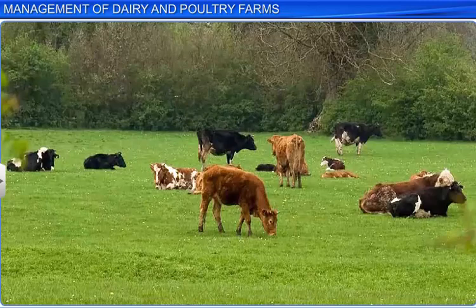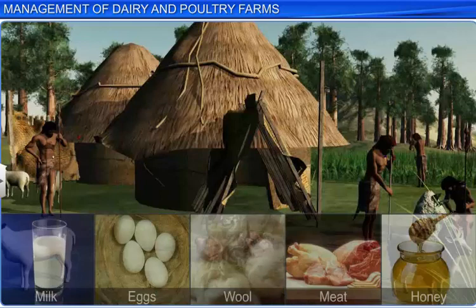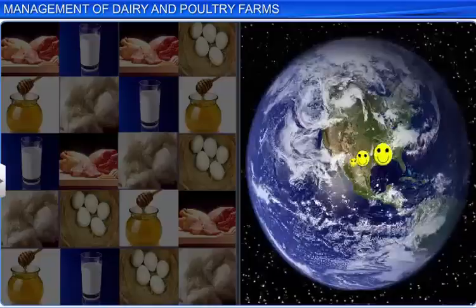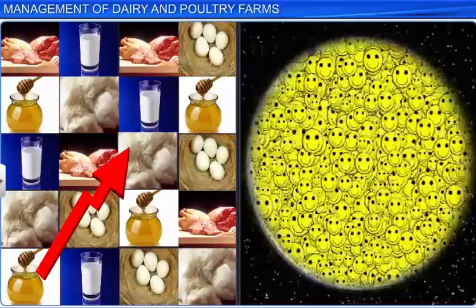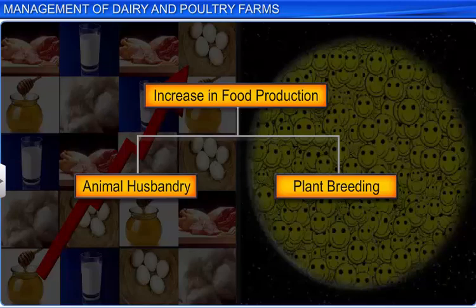Human beings have always been dependent on animals such as cattle, birds, pigs, sheep, and bees for products like milk, eggs, wool, meat, and honey. With an increase in population worldwide, an increase in food production is also required. This can be achieved through animal husbandry and plant breeding.